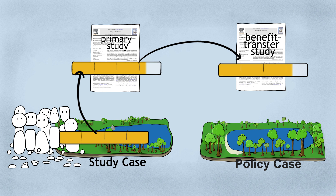So it's very important to base the transfer on solid study cases. The more accurate primary studies there are to work from, the more accurate benefit transfer can be. Like with house appraisal, there are so many houses sold, their value and their characteristics are pretty well documented and very accurate, so the appraisal can give a very good estimation. And that's sort of what we're aiming for with a benefit transfer.